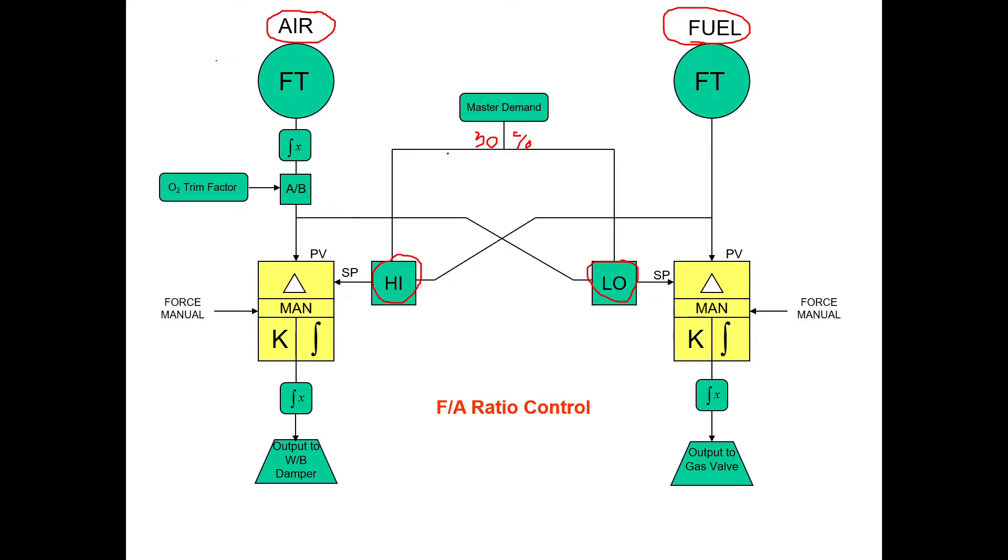Let's say the master demand is going to call for 30%. 30% is now going to go to the high select block and it's going to go to the low select block.